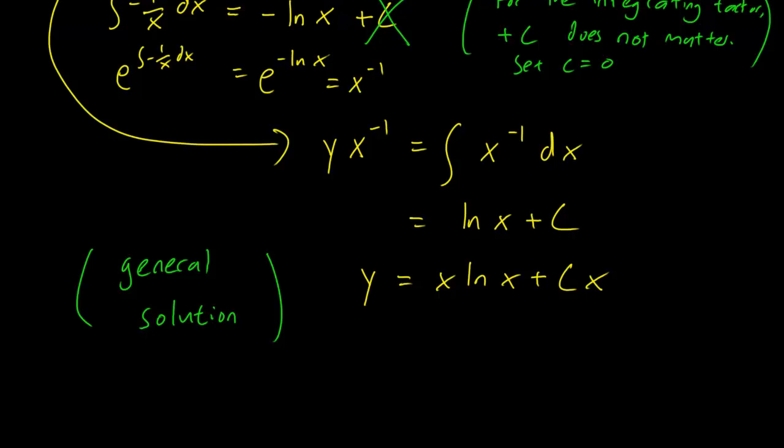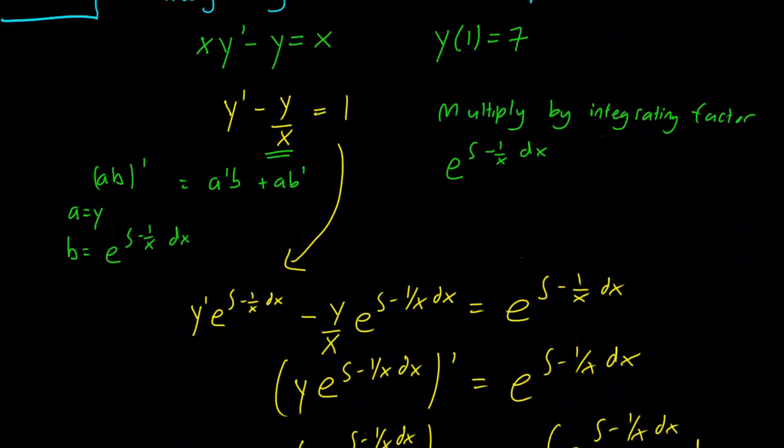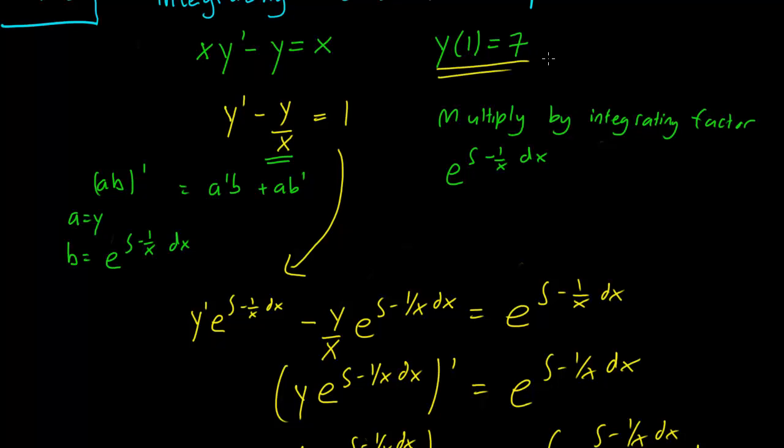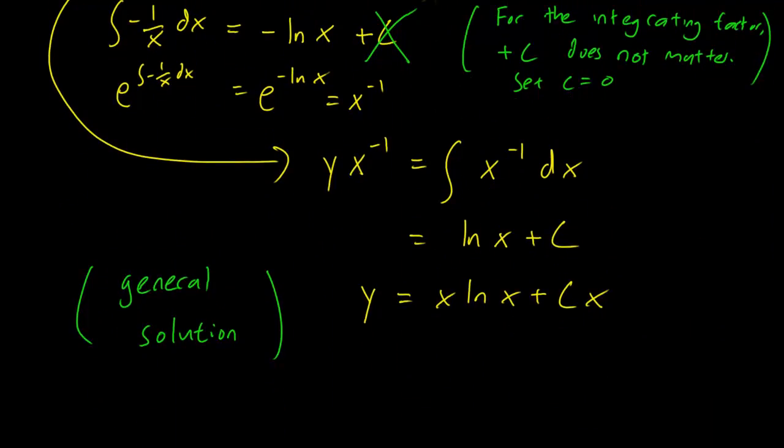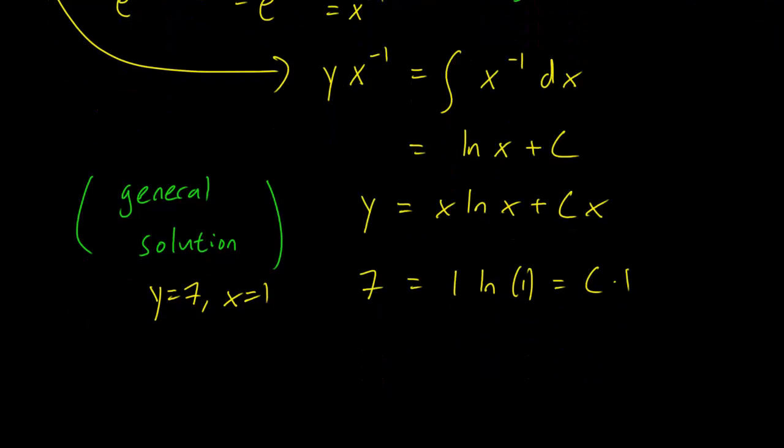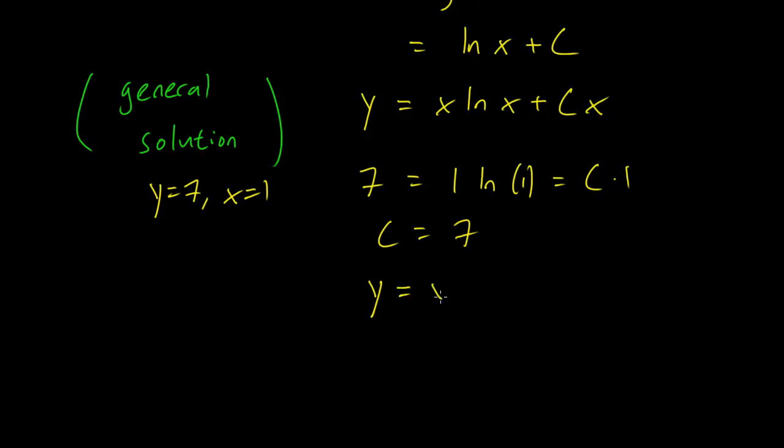To solve for the specific solution we need to look at our initial value which is y of 1 equals 7. So in this case we plug in y equals 7, x equals 1, and we have 7 equals 1 times log of 1 plus c times 1. Log of 1 is 0 of course, and this leaves us with c equals 7 which gets us a specific solution of y equals x log x plus 7x.